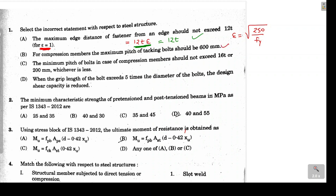Statement C says the minimum pitch for bolts in a compression member should not exceed 16t or 200 mm, whichever is minimum. However, the code says that for compression members the value should be 12t (not 16t); 16t applies to tension members. So this statement is incorrect. Statement D says if the grip length exceeds 5 times the bolt diameter, the design shear capacity is reduced — this is also correct. So option C is the answer.